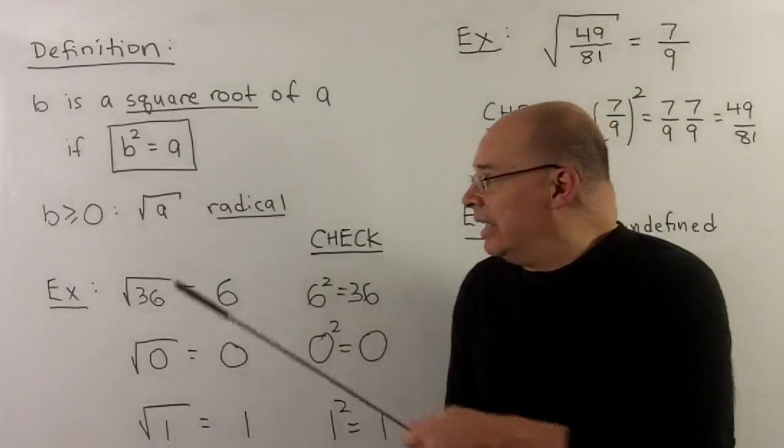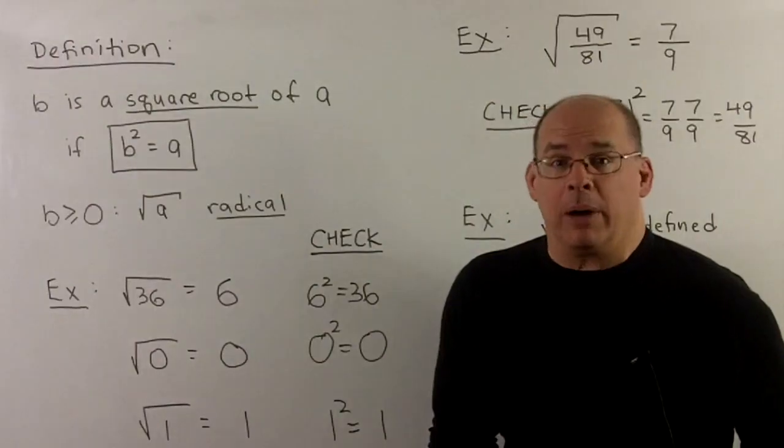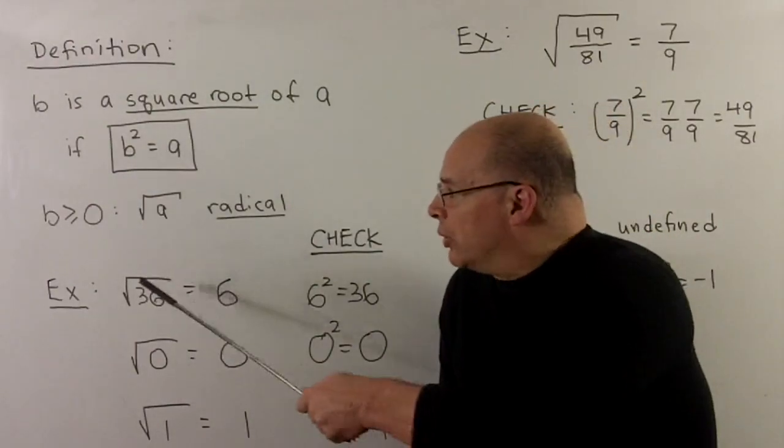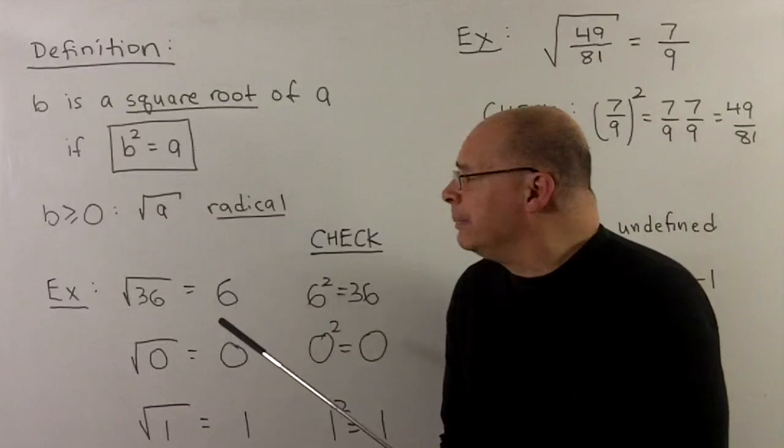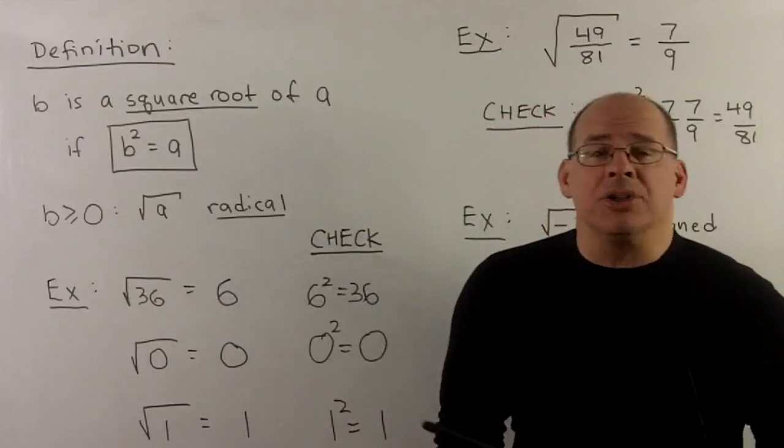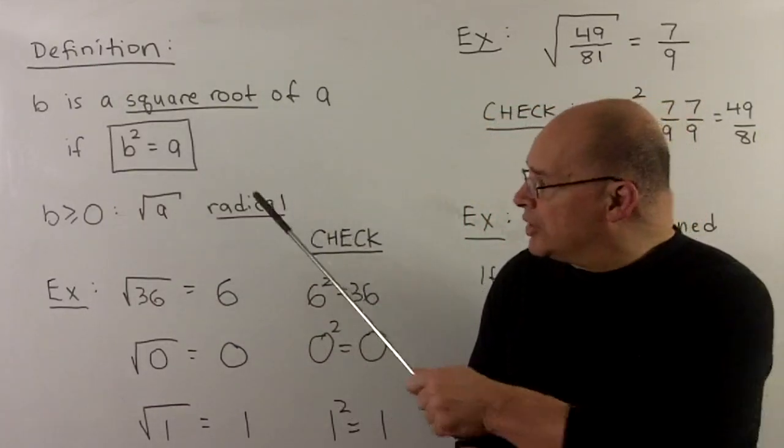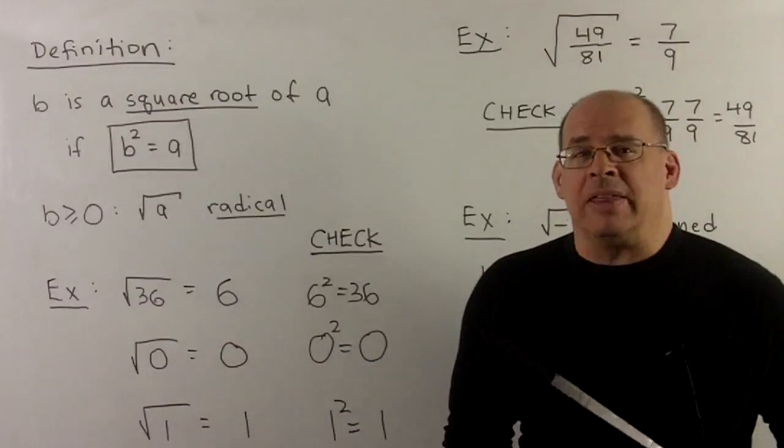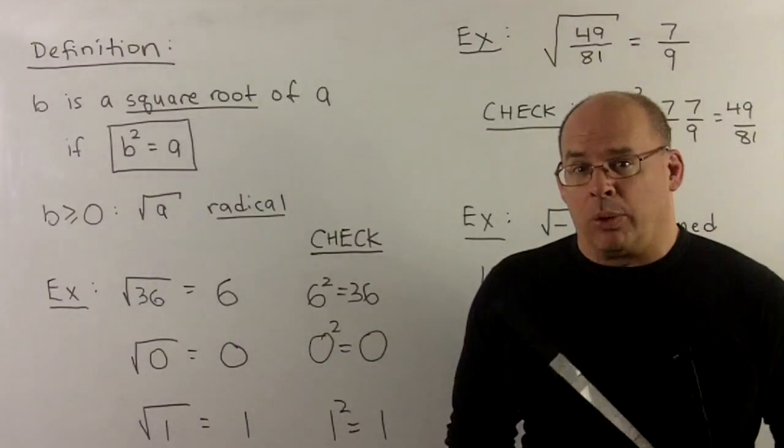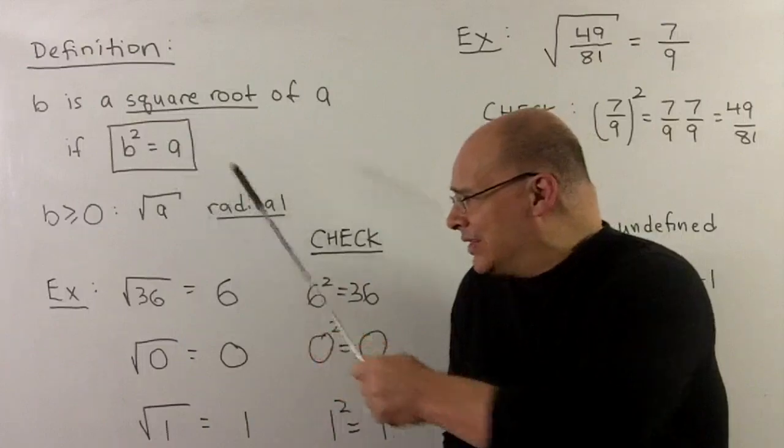If b is zero or a positive number, then we'll use a special notation. We call this radical notation. And then this will also get the fancy name, principal square root of a. Typically that's what people mean when they say square root. We only want the positive answer.